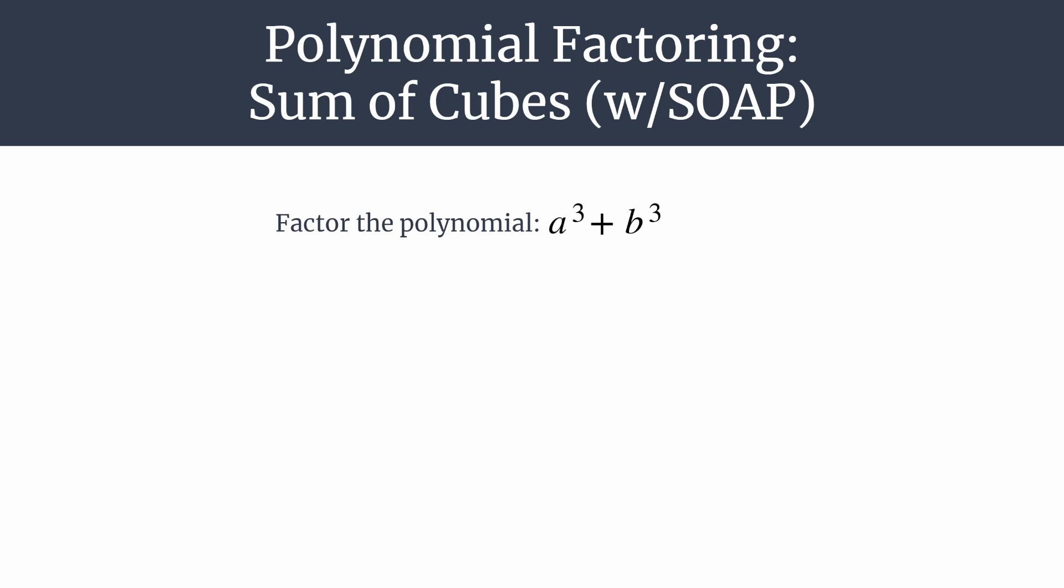So first, let me just show you the template. It'll factor into a binomial and a trinomial, and we are going to put in our first two terms in the binomial, so that'll just be a and b. We'll do the signs in just a minute. And then there's a trinomial, so you'll have three terms.